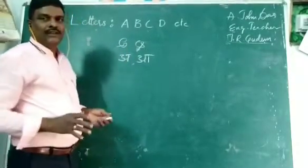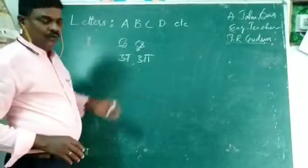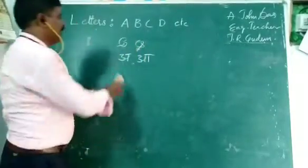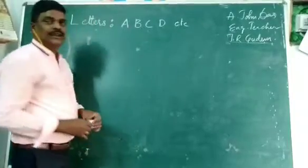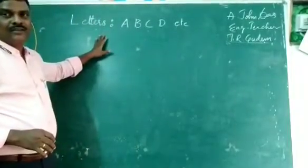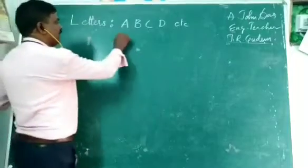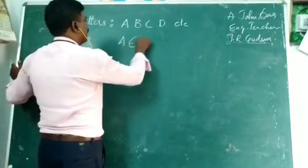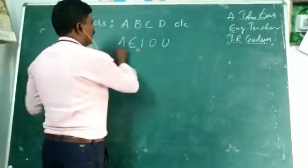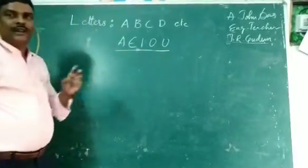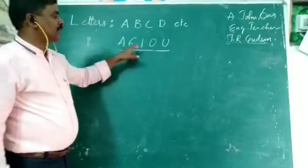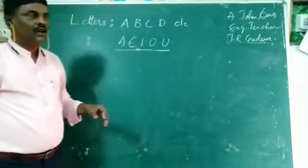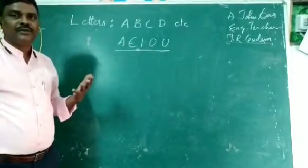Again, in Hindi language, we are having the vowels. Those vowels are A, E, I, O, U. How many are there? Five are there. A, E, I, O, U. Without the combination of these things, there may not be much words.